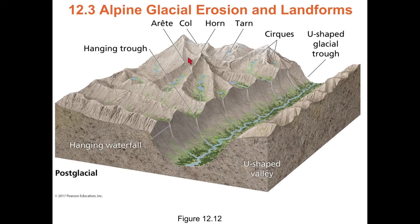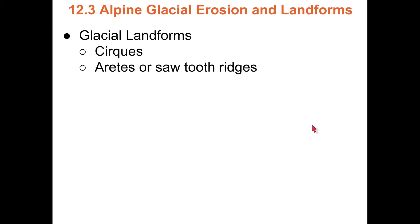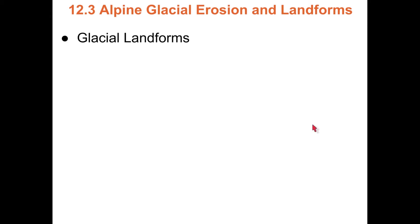Paternoster lakes, a horn, a tarn. A col is a low spot on a ridgeline. We've got cirques, arêtes, cols/passes, horns — all erosional features. A U-shaped valley is the biggest, most obvious indication that a valley has been shaped by a glacier.